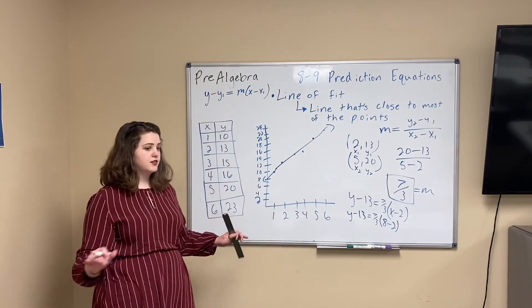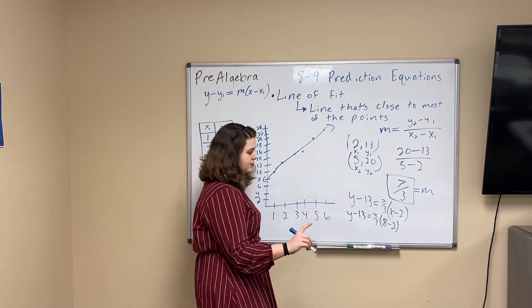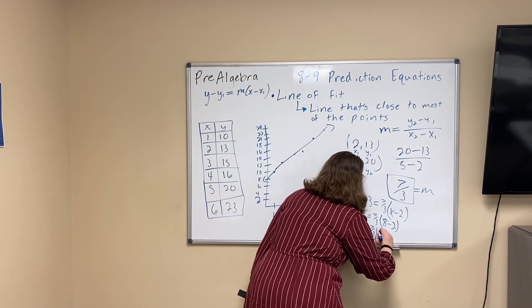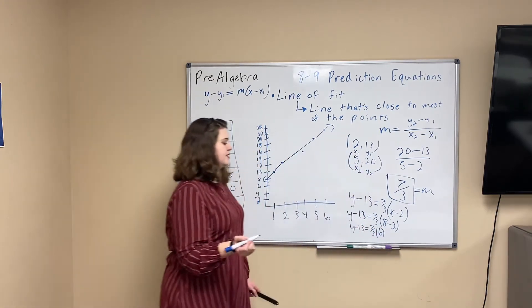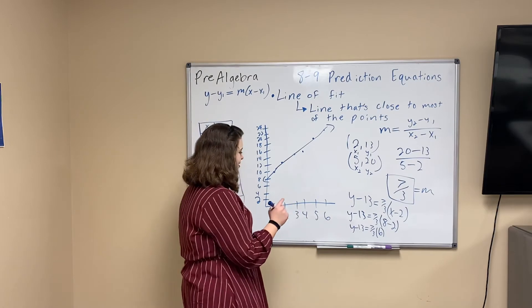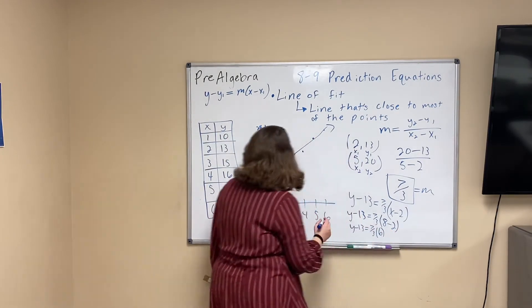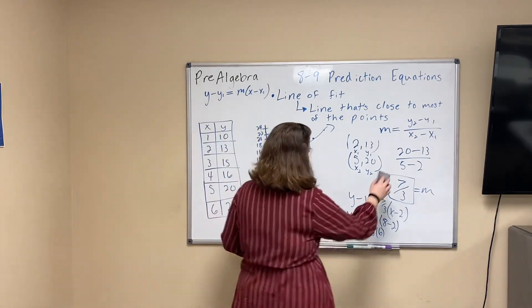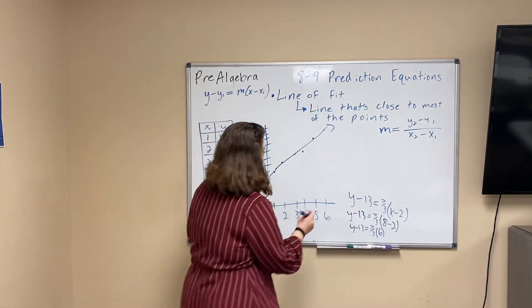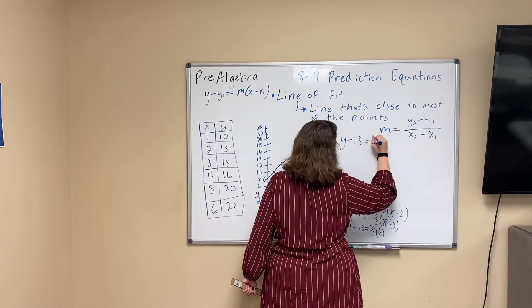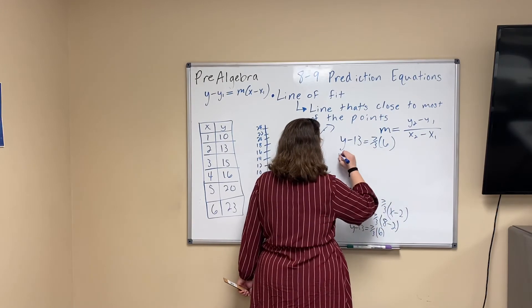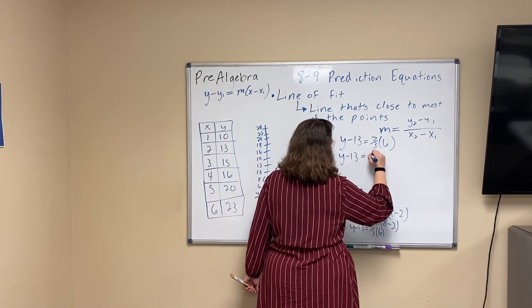And now you're going to solve for y, just like you do in any of your other algebra equations. We're going to do 8 minus 2 is 6, so we're going to have y minus 13 equals 7/3 times 6. 7/3 times 6, see if you can do it in your head really fast. Give you a second. But 7/3 times 6 is going to be, maybe I should write it. Let me copy this up here. y minus 13 equals 7/3 times 6. Alright, and 7/3 times 6 is going to be 14, so y minus 13 equals 14.